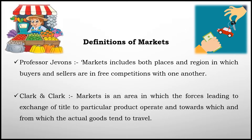According to Clark and Clark, market is an area in which the forces leading to exchange of title to a particular product operate, and towards which and from which the actual goods tend to travel. Here, market is explained from the point of view of exchange of title — the title is shifted from the seller to the buyer once the product is sold. The title travels from the seller to the buyer, and the products also travel from the seller to the buyer.